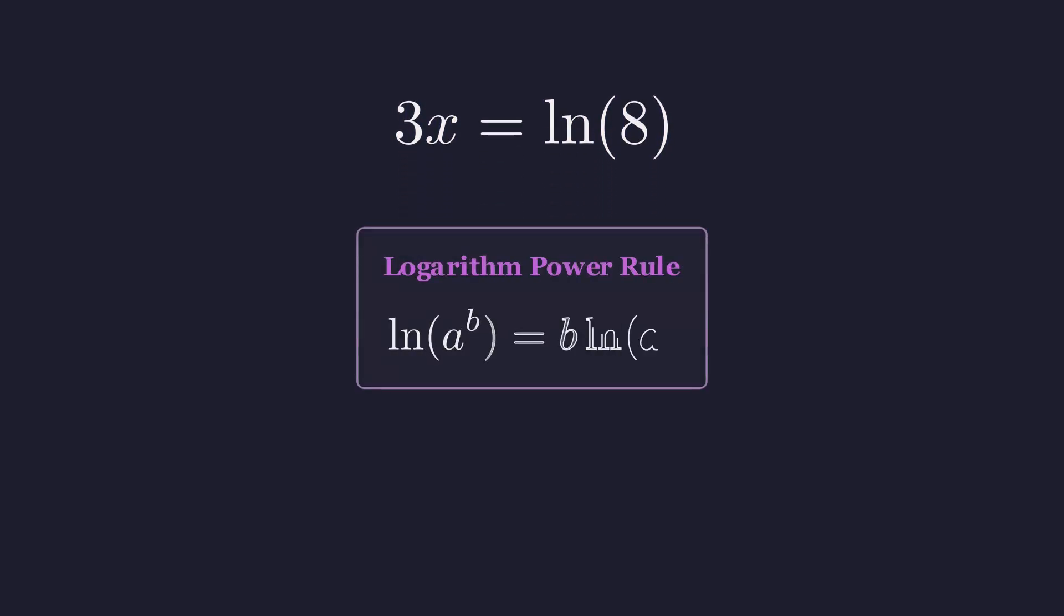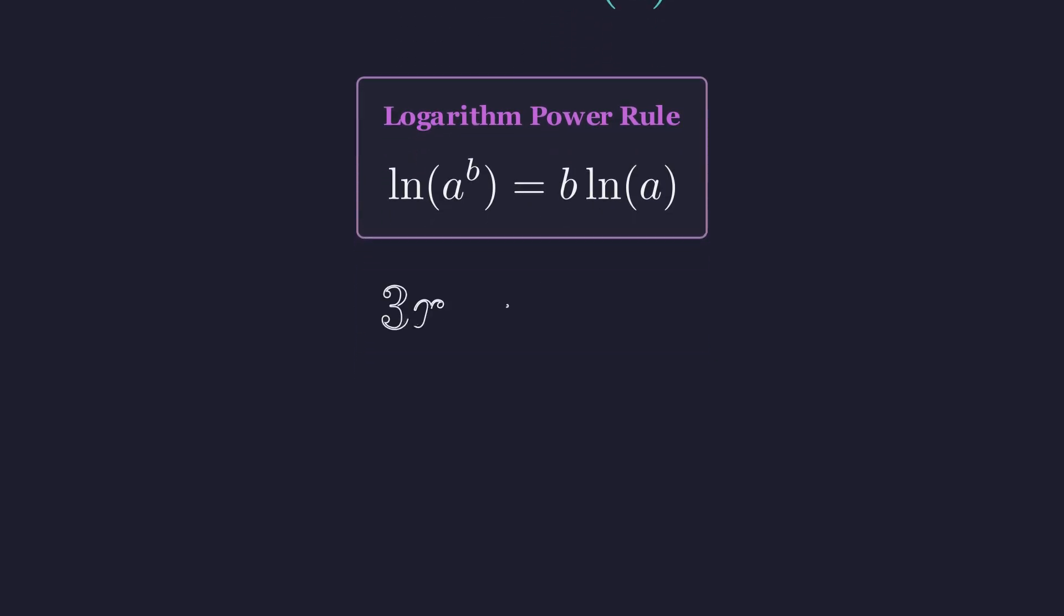Now there's a useful logarithm property we can apply here. The log of a number raised to a power equals that power times the log of the number. Notice that 8 can be written as 2 to the third power. So, we have 3x equals the natural log of 2 cubed. Using the power rule, we can bring that exponent down in front, which gives us 3x equals 3 times the natural log of 2. And now we can divide both sides by 3, giving us x equals the natural log of 2. That's our intersection point.